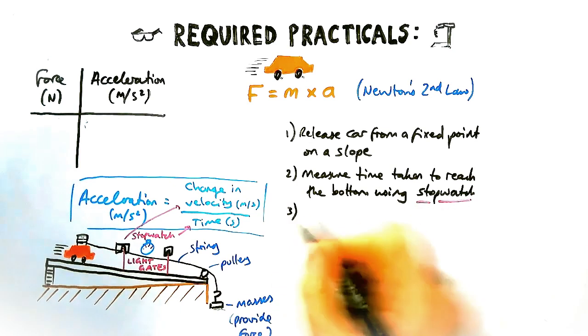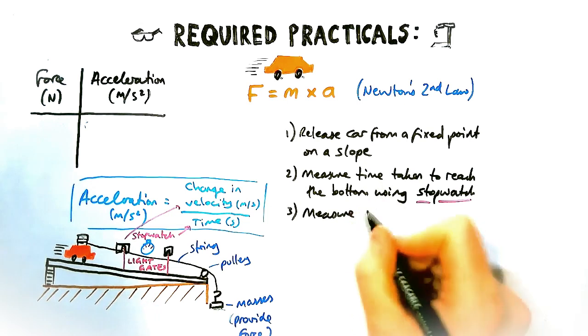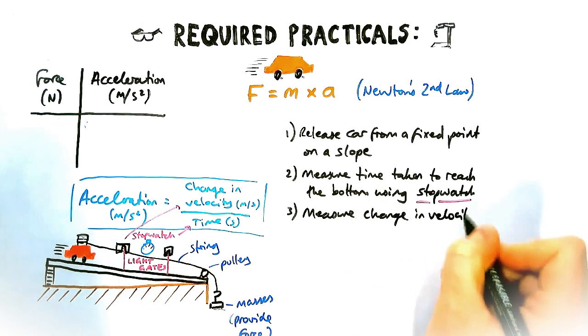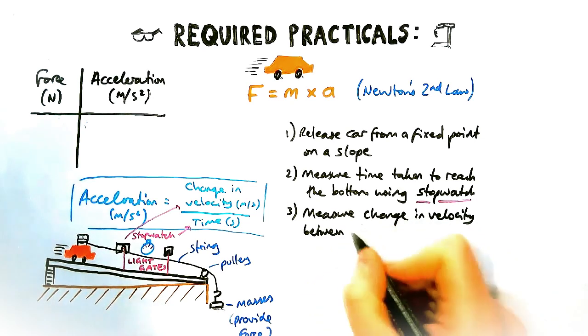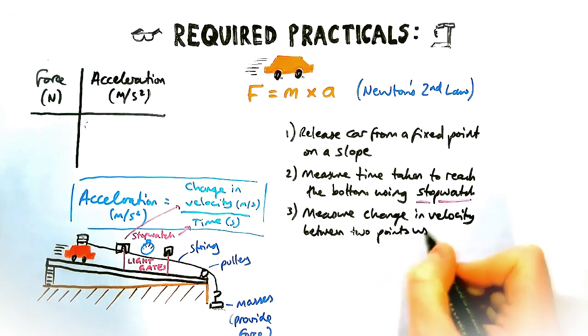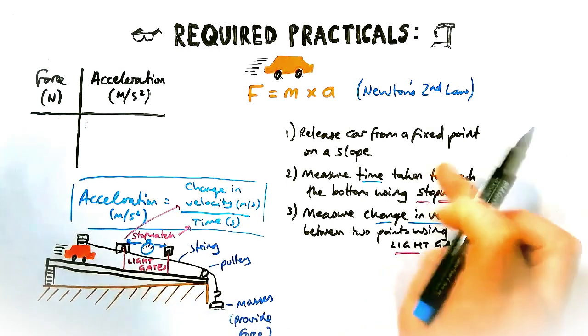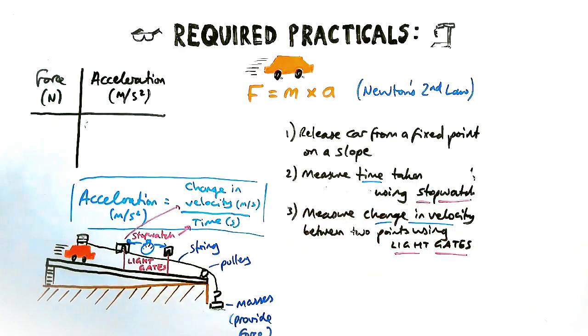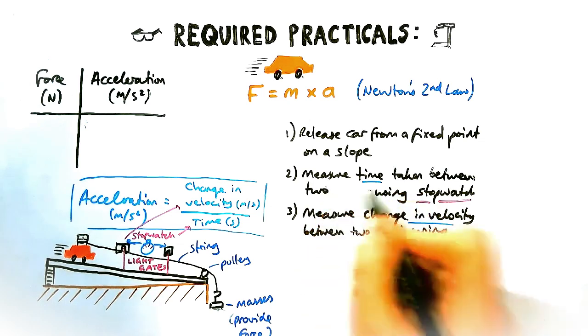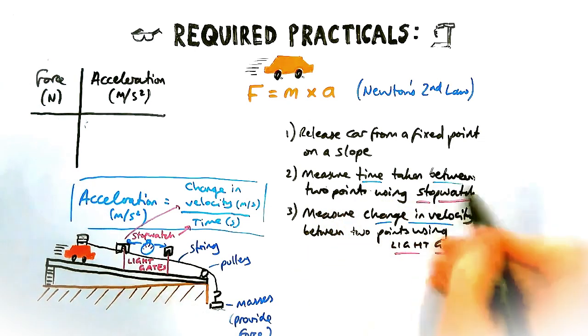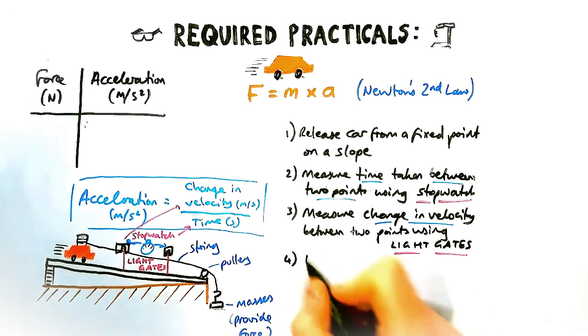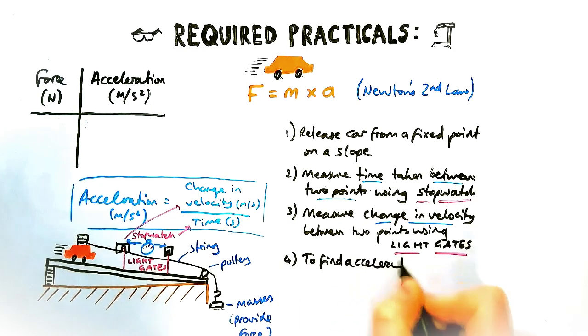Now the slightly tricky one is we're going to measure the change in velocity between two points. Those two points are the two light gates you see in the diagram, which you might notice means that stage two is slightly incorrect. Instead of the stop clock being used to measure the time taken for the car to reach the bottom, actually that's deliberately incorrect. What we should say is it's the time taken for the car to get between those two light gates, because otherwise you're measuring different distances which is not a fair calculation or fair comparison. So the time taken between two points using a stopwatch and the change in velocity between two points using light gates. Make sure you mention that when you're describing a method.